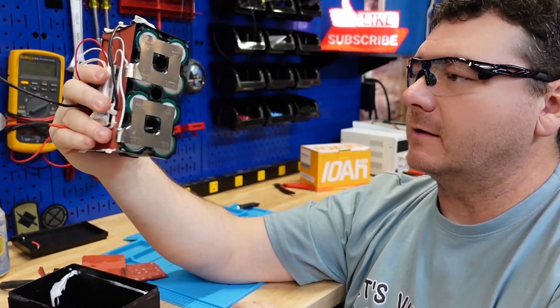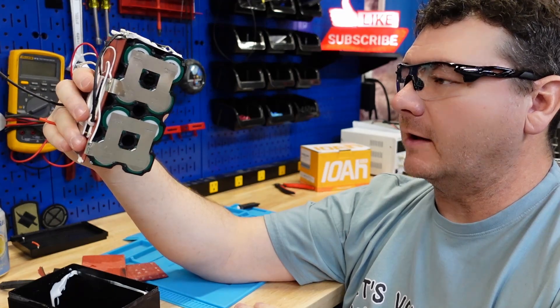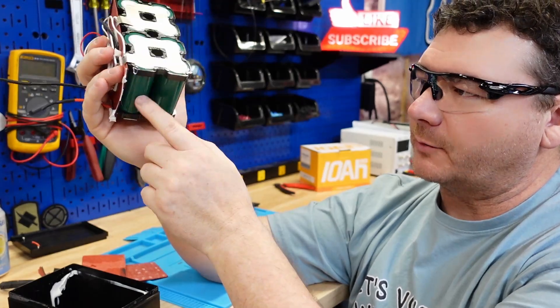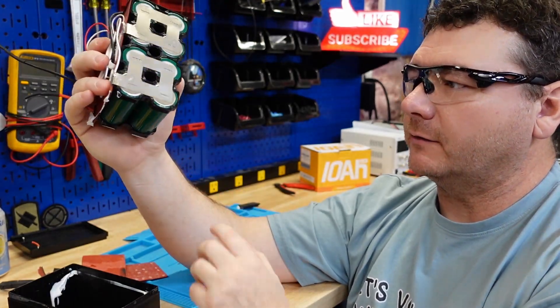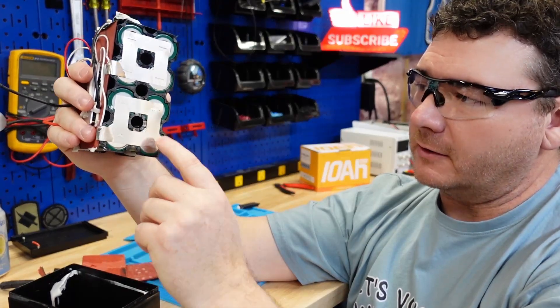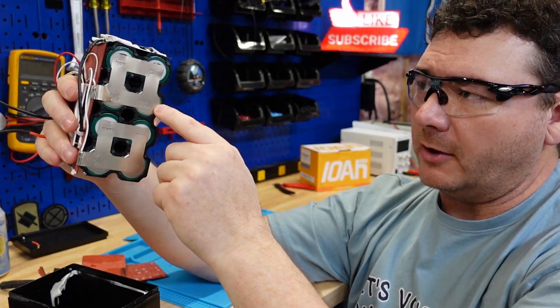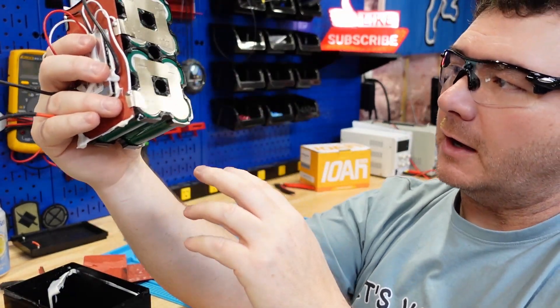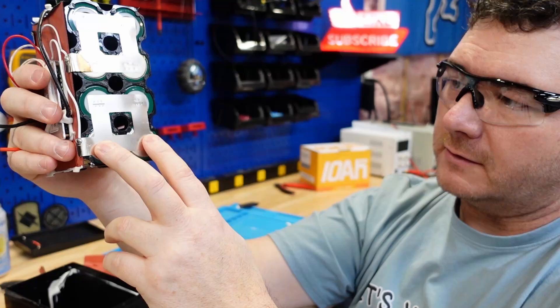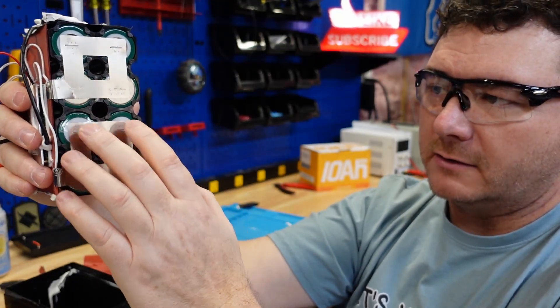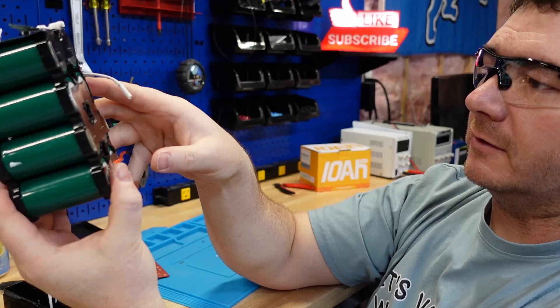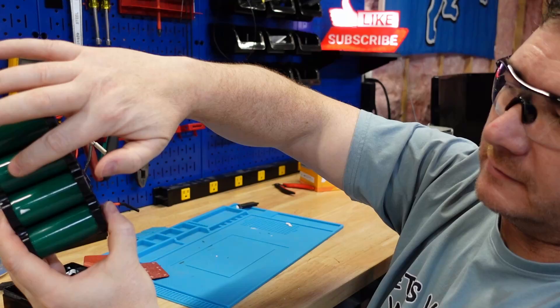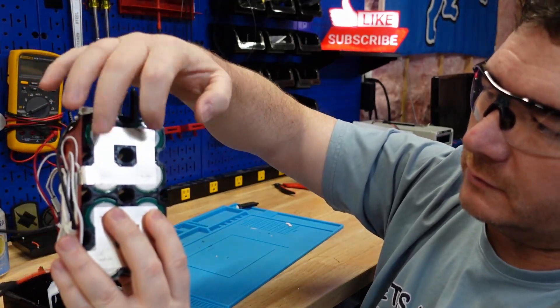This battery pack, it's a 4S2P. These cells, they don't say it on here but I'm guessing these are probably 5 amp hour cells. You have these two in parallel with each other, these two are in parallel, these two are parallel, and these two are in parallel with each other. And then this set of parallel cells are in series with that one, this set is in series with this one on the back side, and then this one right here is in series with these two.